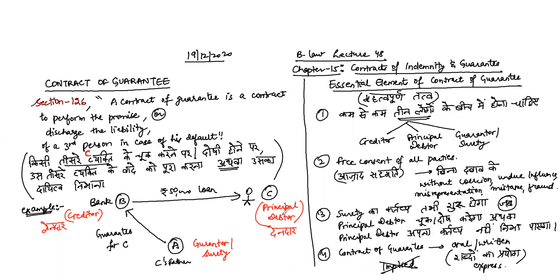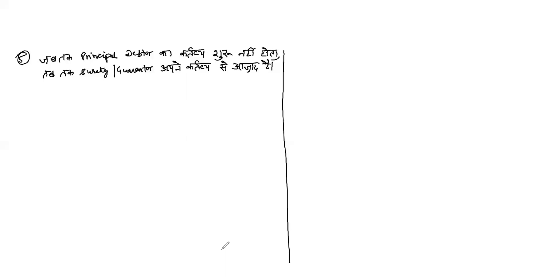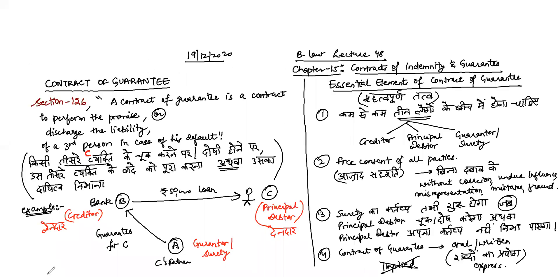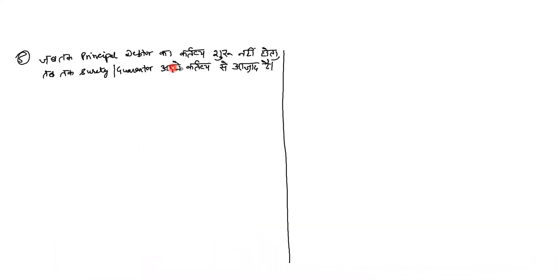As long as the principal debtor's duty has not begun, the surety is free from his duty. First, money will be demanded from the principal debtor. Until then, the guarantor has no need to worry. The surety's duty begins only when the principal debtor refuses to fulfill his promise.